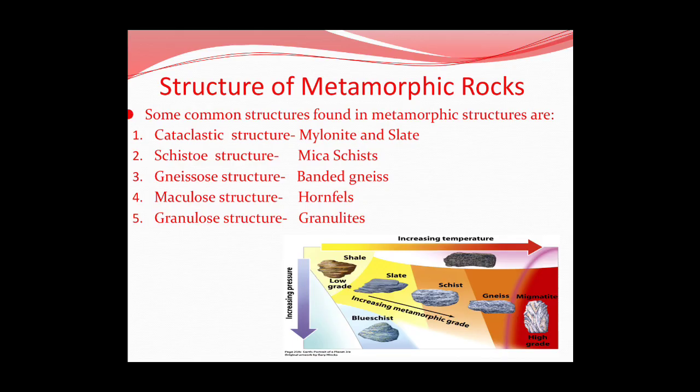Structure of metamorphic rocks: common structures include cataclastic structure (found in mylonite and slate), schistose structure (mica schist), gneissose structure (banded gneiss), and macular structure (hornfels and granulites). The diagram shown represents increasing temperature and increasing pressure axes. Along these axes: shale, a low-grade clay rock, converts to slate; slate under increased temperature and pressure becomes schist; schist becomes gneiss; gneiss forms migmatite at very high grade. Blue schist forms under increasing pressure but with very low temperature effect.